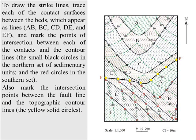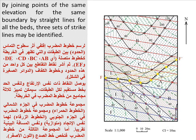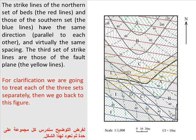To draw the strike lines, trace each contact surface between the beds — AB, BC, CD, DE, and EF — and mark the intersection points between each contact and the contour lines: black circles for the northern set, red circles for the southern set. Also mark the intersection points between the fault line and the topographic contour lines as yellow solid circles. By joining points of the same elevation for the same boundary, three sets of strike lines may be identified: the northern set (red lines), the southern set (blue lines), and the strike lines of the fault plane (yellow lines).